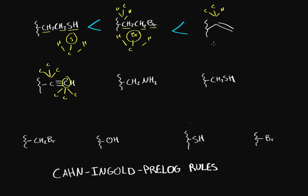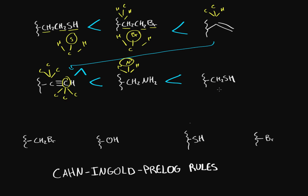Comparing these groups: one has a carbon connected to three carbons, while another has a connection to H, H, and a nitrogen. It doesn't matter if we have three carbons here — having a group with a higher atomic number means it's automatically ranked higher. CH2N versus CH2S: sulfur has a higher atomic number than nitrogen, so we rank CH2S higher. Similarly, CH2SH versus CH2Br: bromine has a higher atomic number, so we rank it higher.